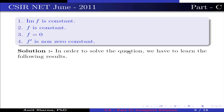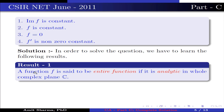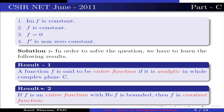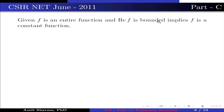In order to solve the question, we need the following results. Result 1: a function f is said to be entire if it is analytic in the whole complex plane C. Result 2: if f is an entire function with bounded real part, then f is a constant function. Given f is entire and real part of f is bounded, this implies f is a constant function.